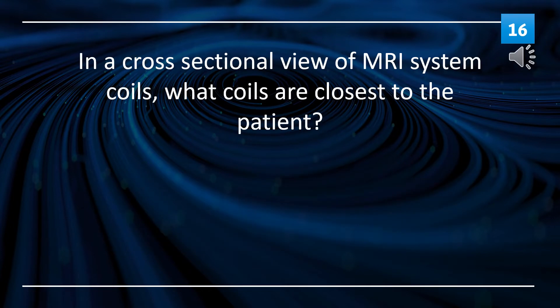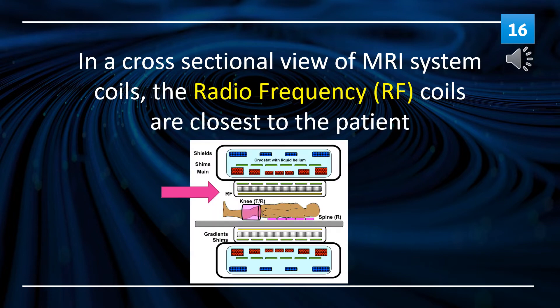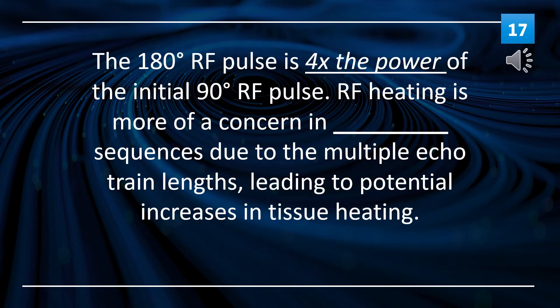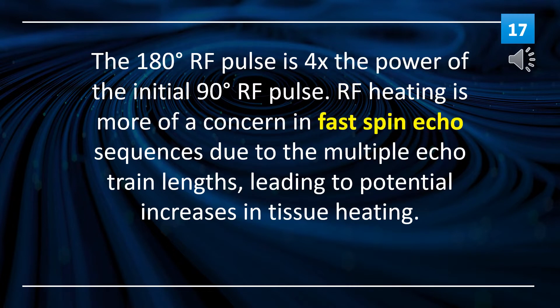In a cross-sectional view of MRI system coils, what coils are closest to the patient? Radio frequency coils are closest to the patient. The 180-degree RF pulse is 4 times the power of the initial 90-degree RF pulse. RF heating is more of a concern in fast spin echo sequences due to the multiple echo train lengths, leading to potential increases in tissue heating.